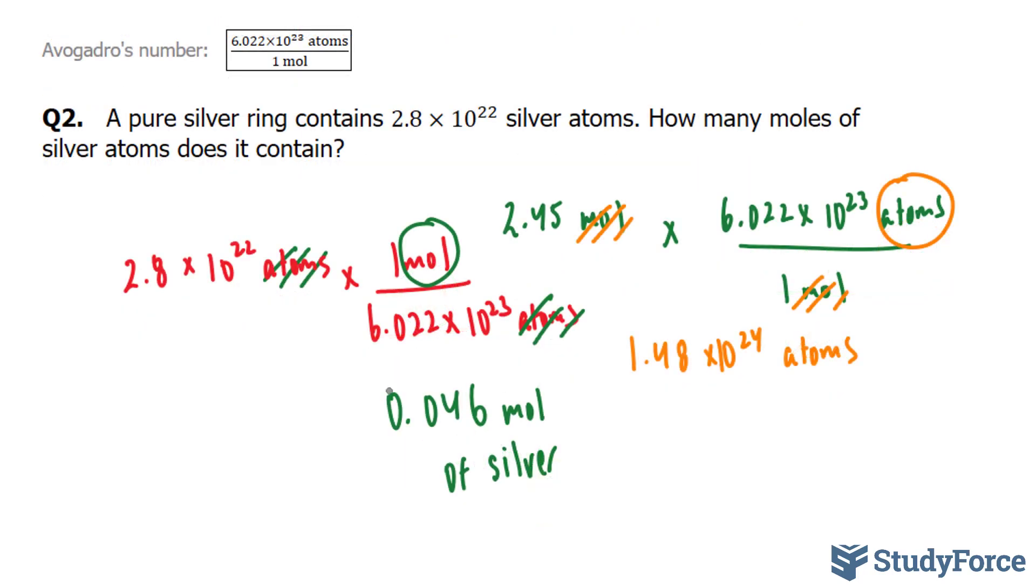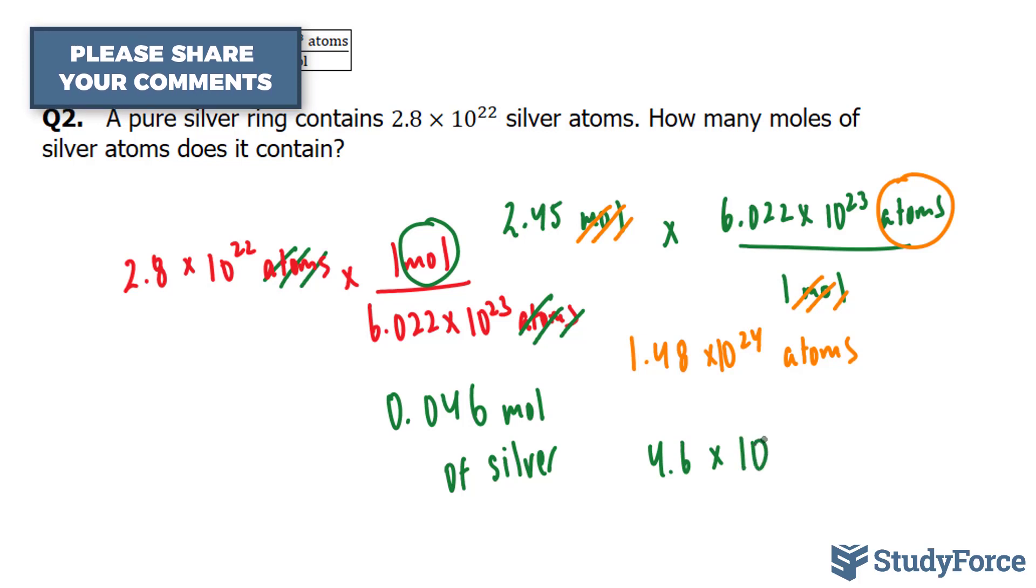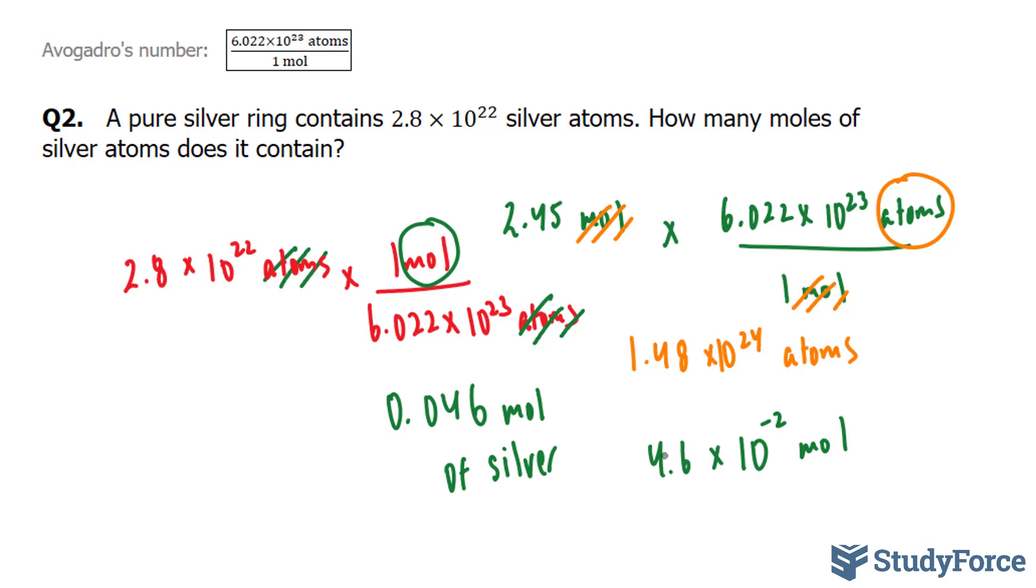And, of course, if you want this in scientific notation, you write down 4.6 times 10 to the power of negative 2 mole. Think of this negative 2 going in this direction, moving this once, twice, gives you what you get.